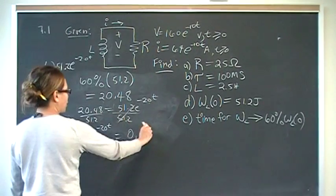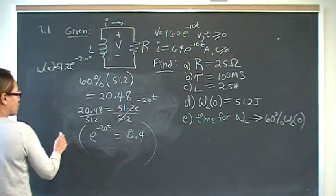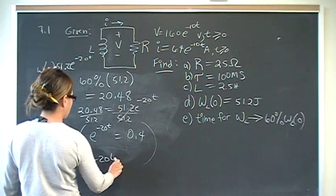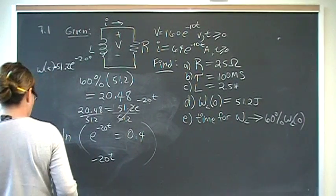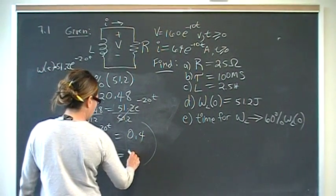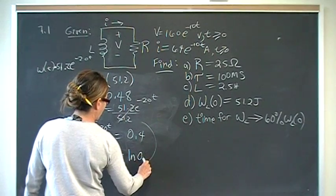So to get the t out, we take the natural log. That gives us negative 20t is equal to the natural log of 0.4.